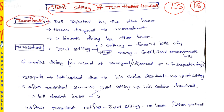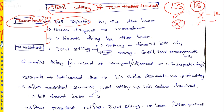Now we shall see the three conditions where a deadlock arises. Condition one: the bill is rejected by the other house. A bill is passed in Lok Sabha and rejected in Rajya Sabha — this is a deadlock. Also, a bill introduced in Rajya Sabha, passed in Rajya Sabha, and then rejected in Lok Sabha — this situation also leads to a deadlock.